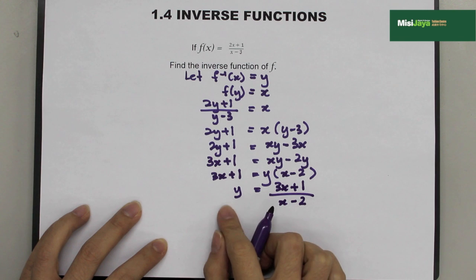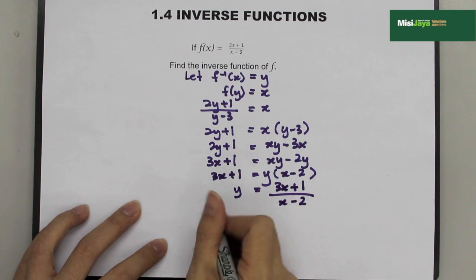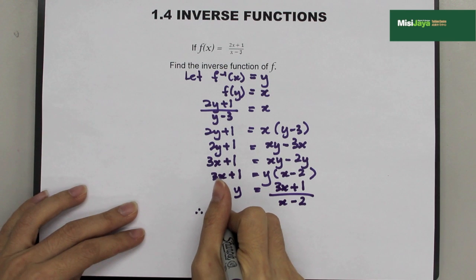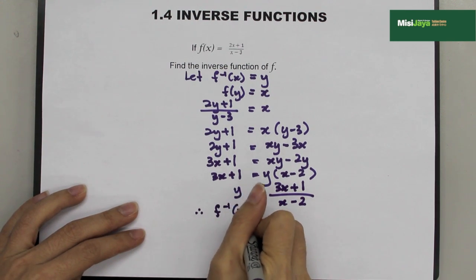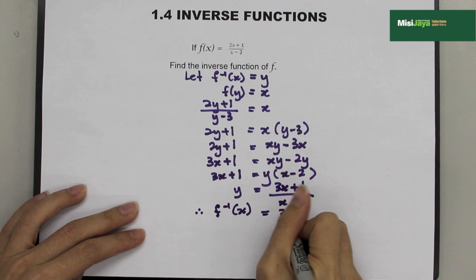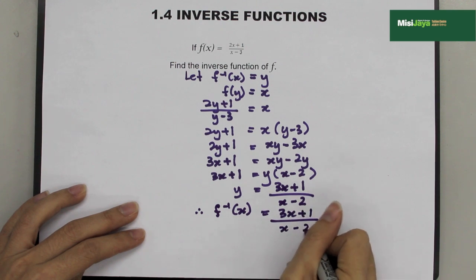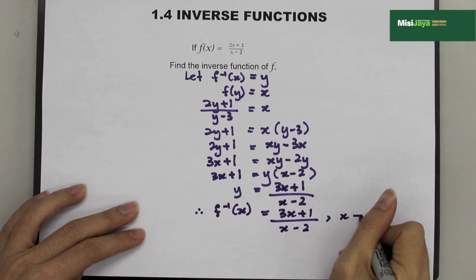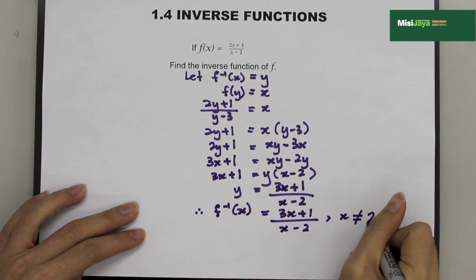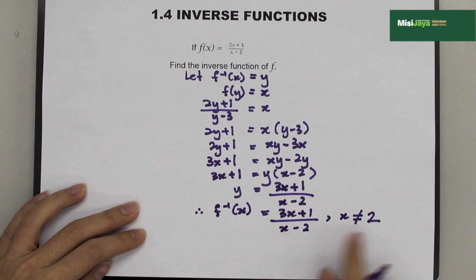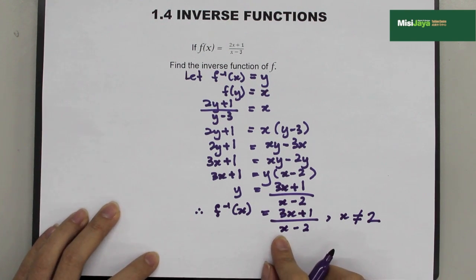And we cannot leave the answer as y equals. So, you have to write therefore f⁻¹(x) = (3x + 1)/(x - 2). With the condition x ≠ 2. Because if x equals to 2, then, the denominator will be 0.